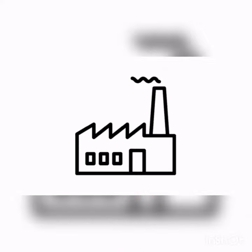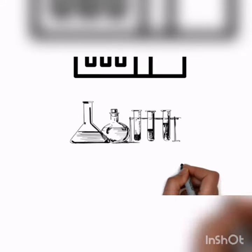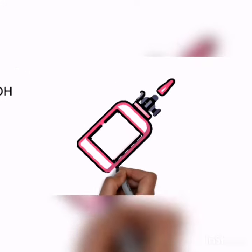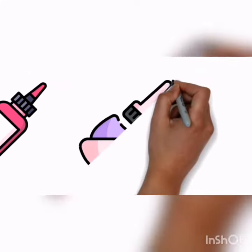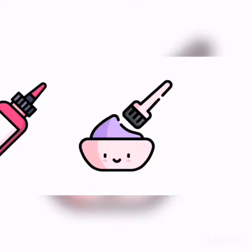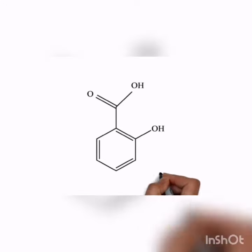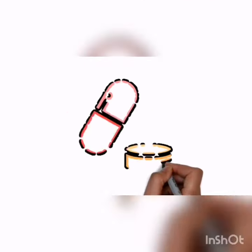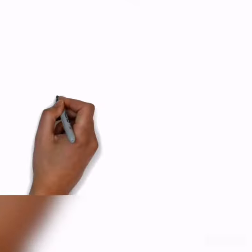The Kolbe-Schmitt reaction can also be used for industrial synthesis of 3-hydroxy-2-naphthalic acid, which is a common precursor to azo dyes and pigments. Finally, salicylic acid can be used to make aspirin by reacting it with acetic anhydride. Aspirin is commonly used as a painkiller.